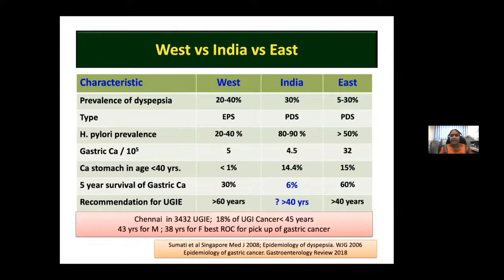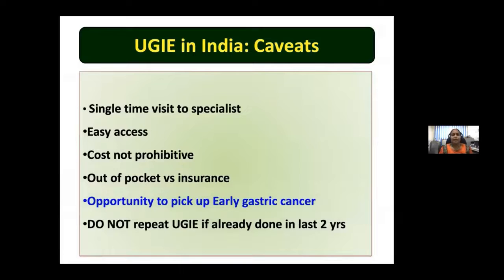In India, endoscopy is accessible, cost is relatively not prohibitive, and it is out-of-pocket — no insurance clearance needed — making it an opportunity to pick up early gastric cancer. However, there is no rationale for repeating endoscopy done within the last two years unless symptoms have significantly worsened. During endoscopy, look for esophagitis, erosions, hiatus hernia in the esophagus; fundic gastritis and atrophy; gastric polyps; drug-induced erosions; antral nodularity from H. pylori gastritis; and chronic atrophic gastritis.